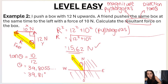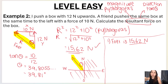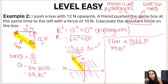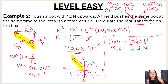Using compass points for the final answer: F-net = 15.62 newtons, 39.81° west of north — not north of west. If you struggle with which way to say it, watch my directions video. The other method is to give direction relative to the positive x-axis.